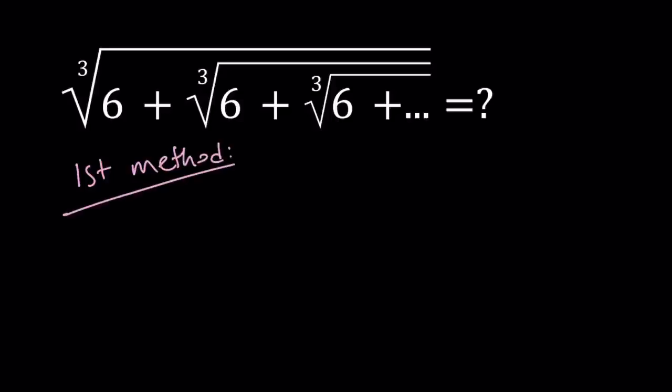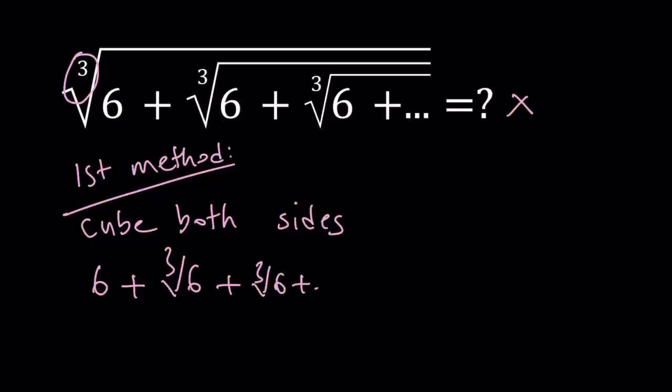For my first method, I'm going to call this expression, and that's going to go for both methods, but I'm going to call this whole thing x. And then I would like to cube both sides. When I cube both sides, the outermost cube root is going to disappear, leaving us with 6 plus the cube root of 6 plus the cube root of 6 plus dot dot dot, so on and so forth. And the right-hand side is going to be x cubed.